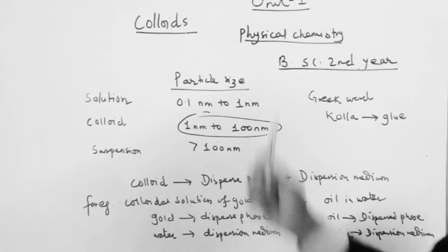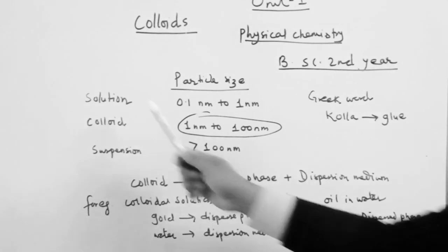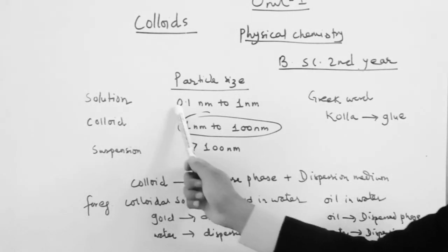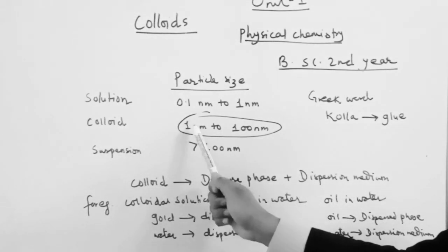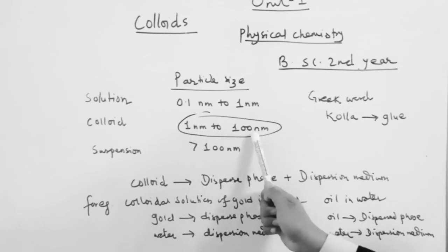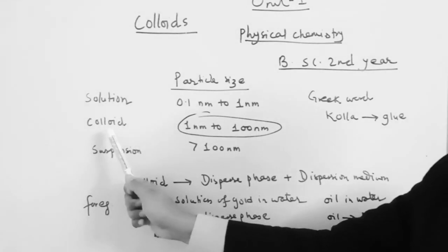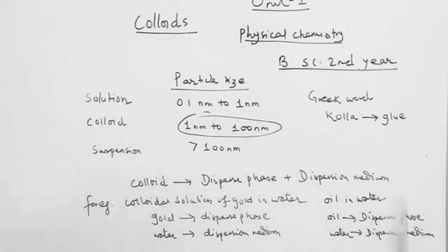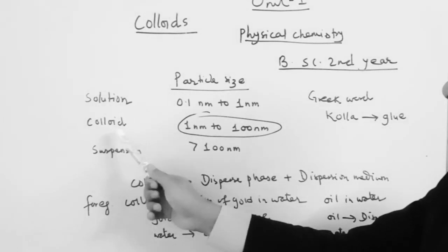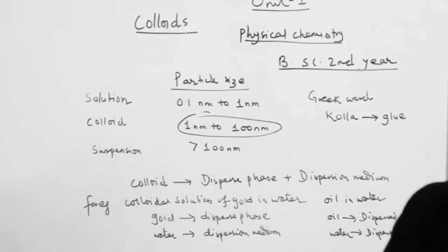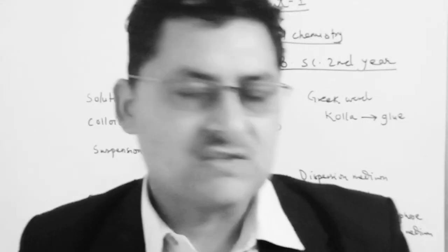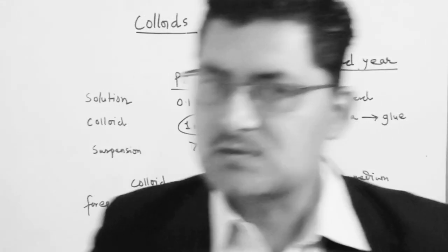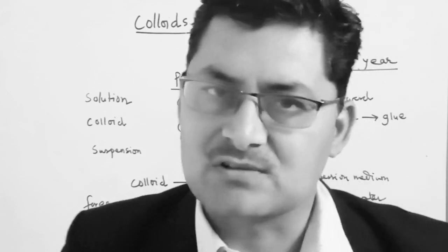We have a solution for particle size 0.1 nanometer to 1 nanometer. For a particular intermediate particle size range, we have a colloid. When the particle size is larger, we have a suspension. We can classify mixtures into three types based on particle size.